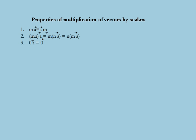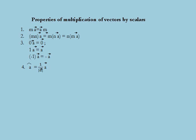The multiplication of 0 with a vector a is equal to the null vector. The multiplication of vector a with 1 is equal to vector a itself, and the multiplication of minus 1 with vector a is equal to the negative of that vector, that is minus vector a. If a-hat is the unit vector in the direction of vector a, then a-hat is equal to 1 divided by the modulus of vector a, multiplied by vector a. Note that 1 divided by the modulus of vector a is a scalar quantity.